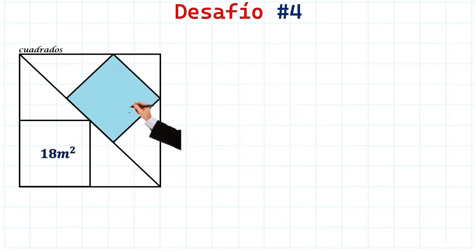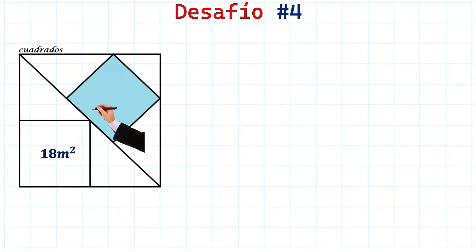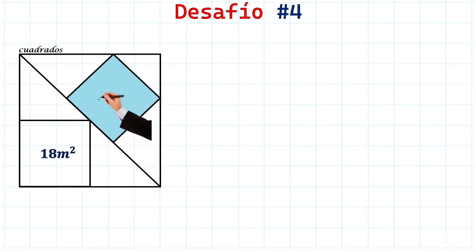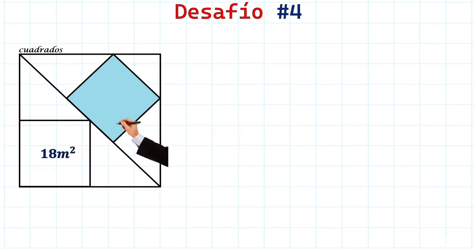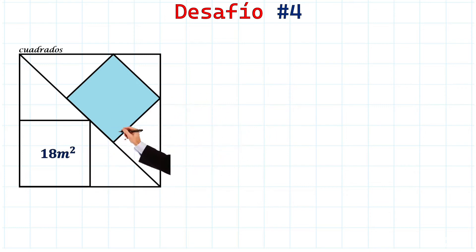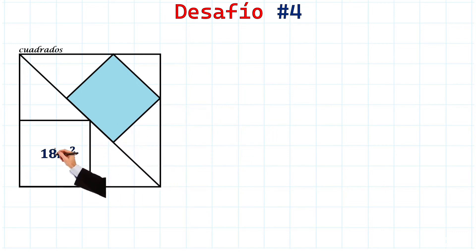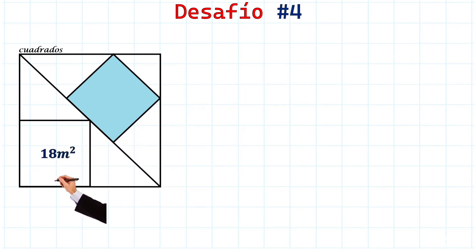Hello friends, look at what an interesting exercise we have here. We have three squares and we need to find the shaded area of this blue square. Let's get started — first, as always, we're going to label.